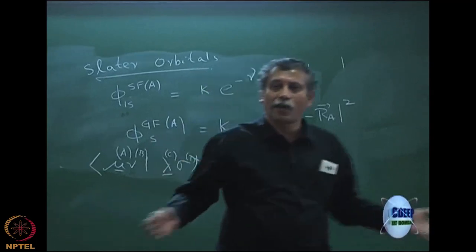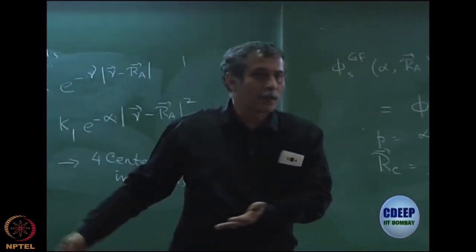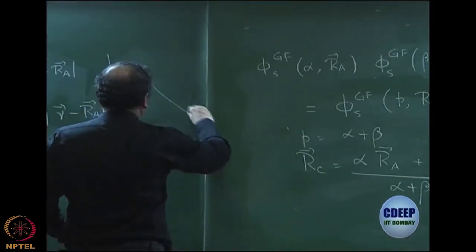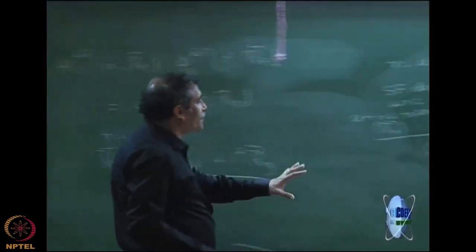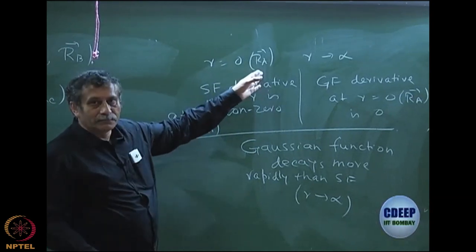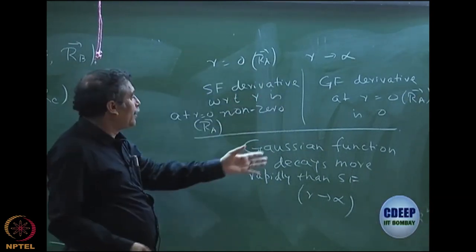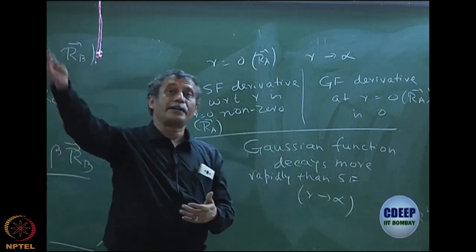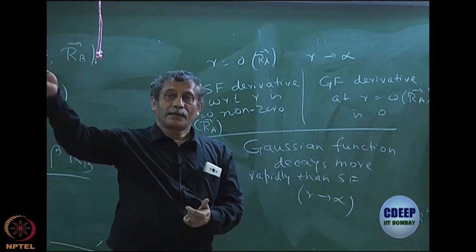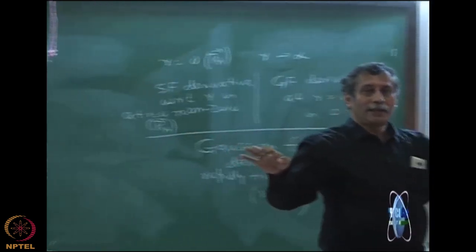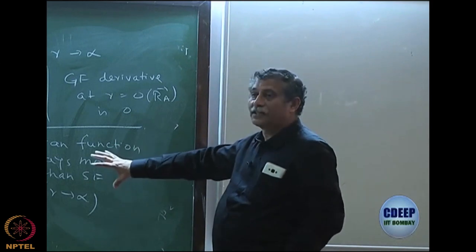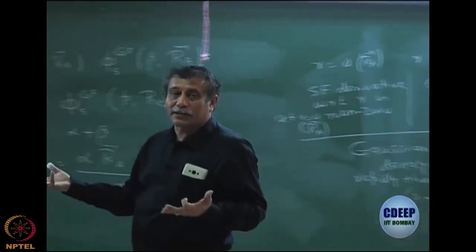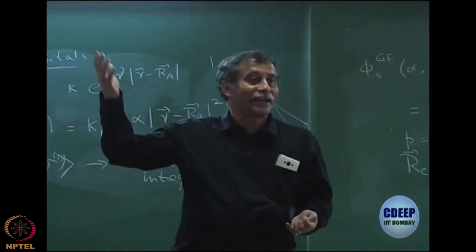Furthermore, the Gaussian function decays more rapidly than the Slater function, which is a problem at R tending to infinity. Exponential minus r² decays much faster than exponential minus r. So if the Slater decays like this, the Gaussian will decay much faster. A single Gaussian does not represent the physics of the Slater orbital either at the origin of the atom nor at large r.